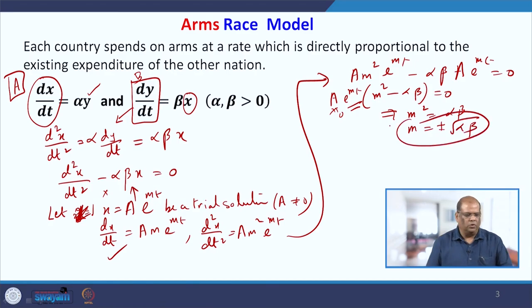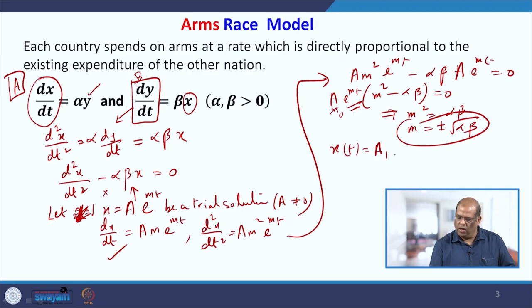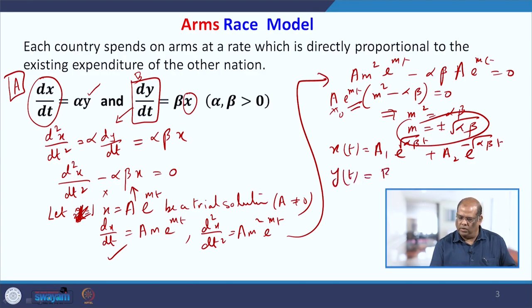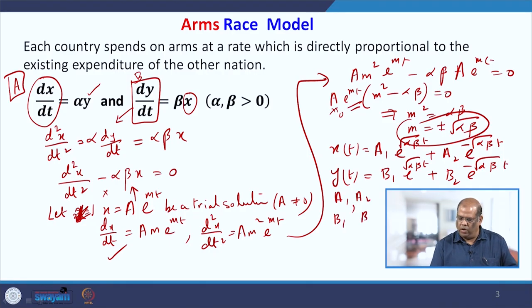So the solution to this differential equation is X(t) = A₁·e^(√(αβ)·t) + A₂·e^(−√(αβ)·t). In a similar manner, Y(t) = B₁·e^(√(αβ)·t) + B₂·e^(−√(αβ)·t), where A₁, A₂, B₁, and B₂ are arbitrary constants.